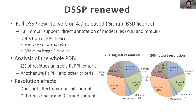While we had this data, we also looked at some resolution effects. We looked at the 20% highest resolution residues in the PDB and the 20% lowest resolution residues. We found no effect on random coil content at low resolution, but we did see that at low resolution you're more likely to find more alpha helix and less beta strands — though I'm not drawing any conclusions from that.